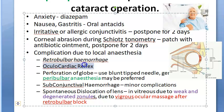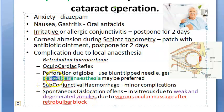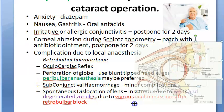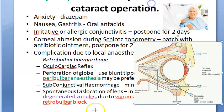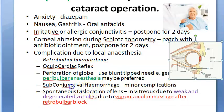Complications due to local anesthesia: there can be retrobulbar hemorrhage, oculocardiac reflex, and perforation of the globe. To avoid globe perforation, they use a blunt-tipped needle with gentle injection. Peribulbar anesthesia may be preferred over retrobulbar. Peribulbar is around the eyeball, while retrobulbar is behind the eyeball — peribulbar is preferred to avoid globe perforation.